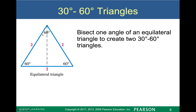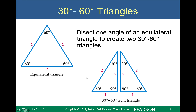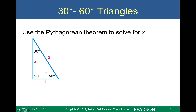If I have an equilateral triangle, I can't use trigonometry with that because trigonometry requires a 90-degree angle. So when I bisect this equilateral triangle, it forms a 30-60-90 triangle, and then I can actually do some trigonometry with it. In a 30-60-90 triangle, my hypotenuse is going to be twice the value of my short leg. I can use the Pythagorean theorem to solve for x: 2 squared equals 1 squared plus x squared, so x is the square root of 3.